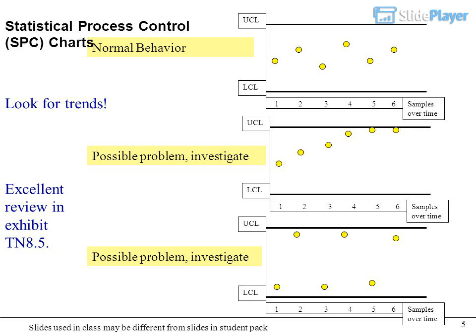Statistical process control SPC charts: UCL and LCL with samples over time. Normal behavior shows random variation within limits. Look for trends - possible problems to investigate. Excellent review in Exhibit TN 8.5.